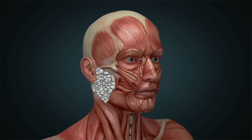The parotid gland, one of the major salivary glands, is located in front of the ear. It is intimately associated with the facial nerve, which originates from behind the ear and spreads outward to innervate all the muscles of the face. With any type of parotid gland surgery, anatomic knowledge of the facial nerve and its branches is essential.